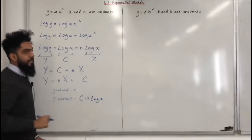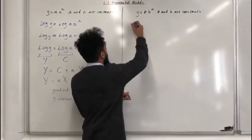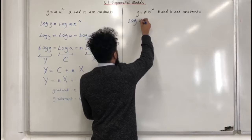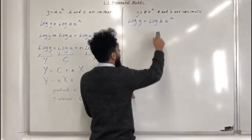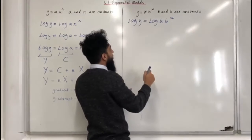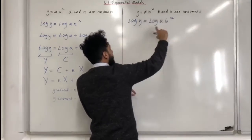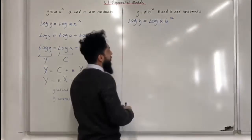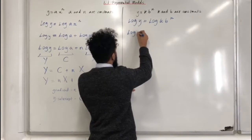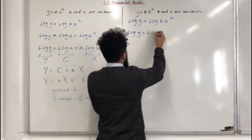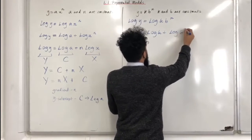Let's have a look at the exponential model. Again, we need to apply logs on both sides. So I can write log y is equal to log kb to the power x. This kb to the power x is the same as writing k multiplied by b to the power x. So we can split this log into two parts using the multiplication rule for logs — I can write log y is equal to log k plus log b to the power x.